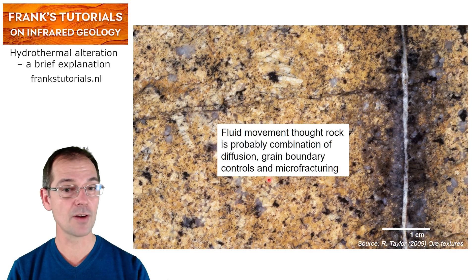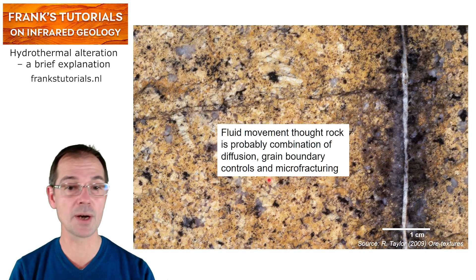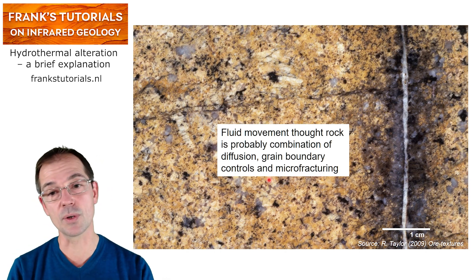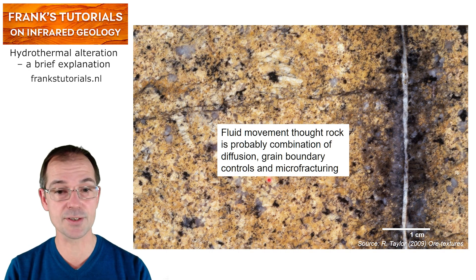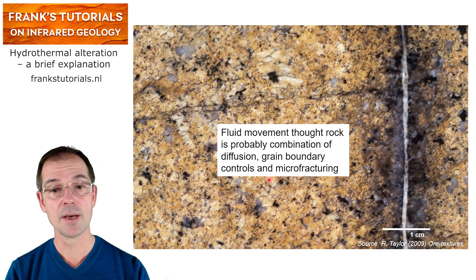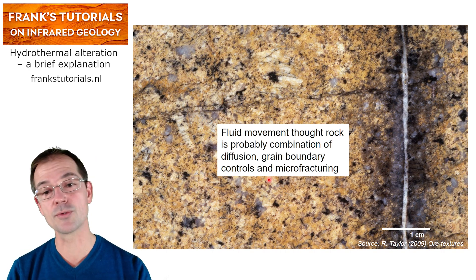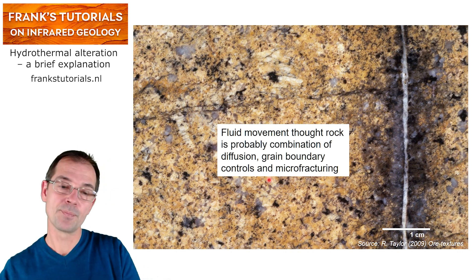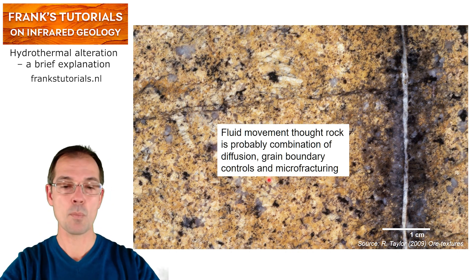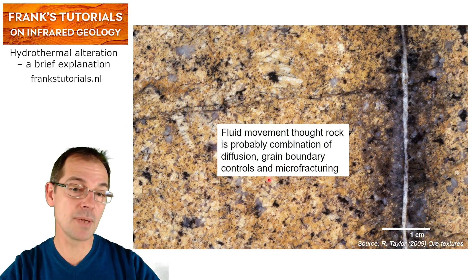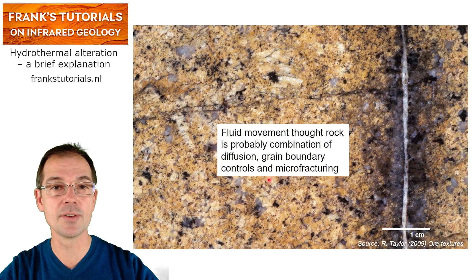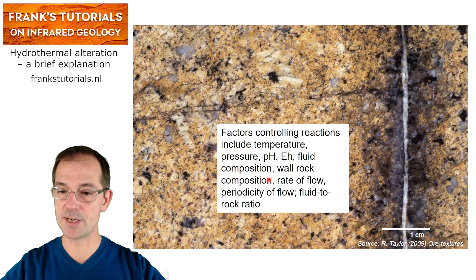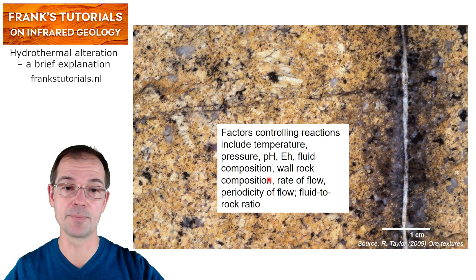Fluid movement occurs by a combination of migration along fractures, diffusion, grain boundary controls, and micro-fracturing. If there were no movement of fluid through the rock, then no alteration would take place.